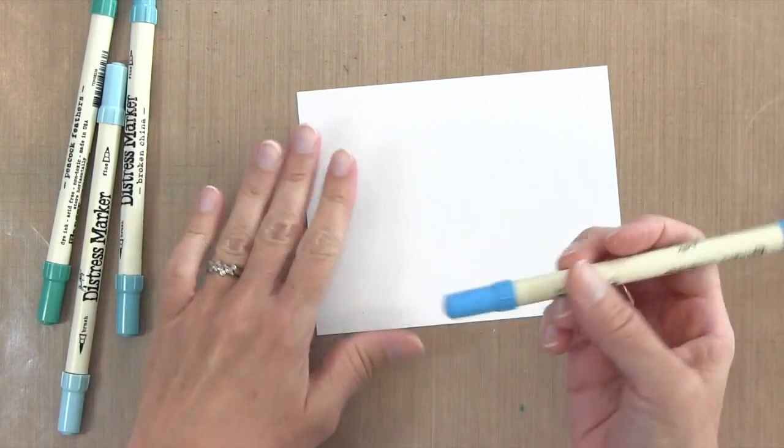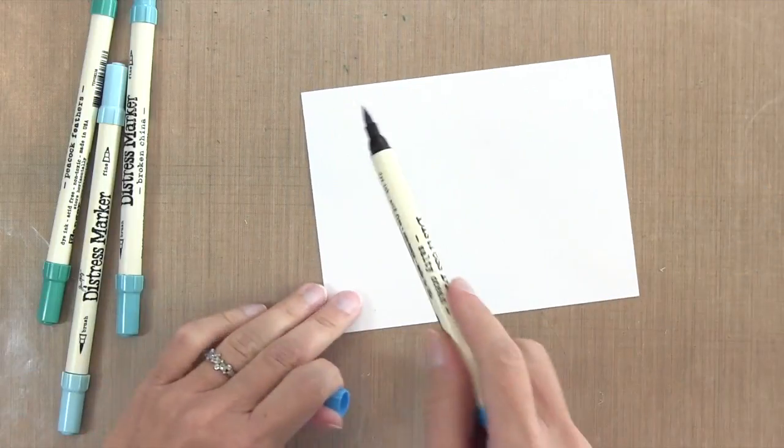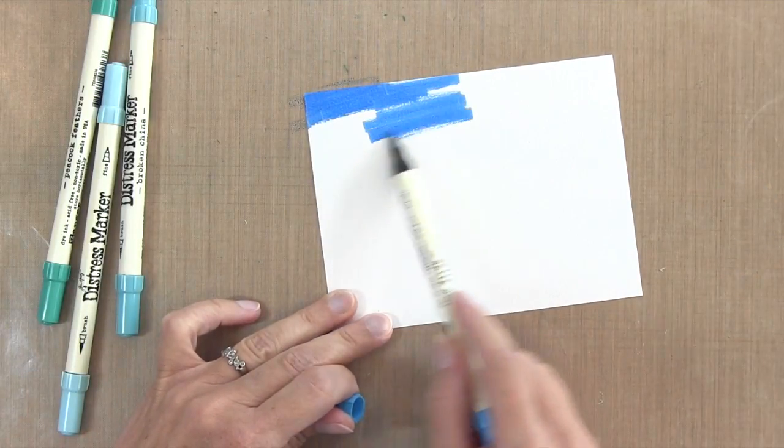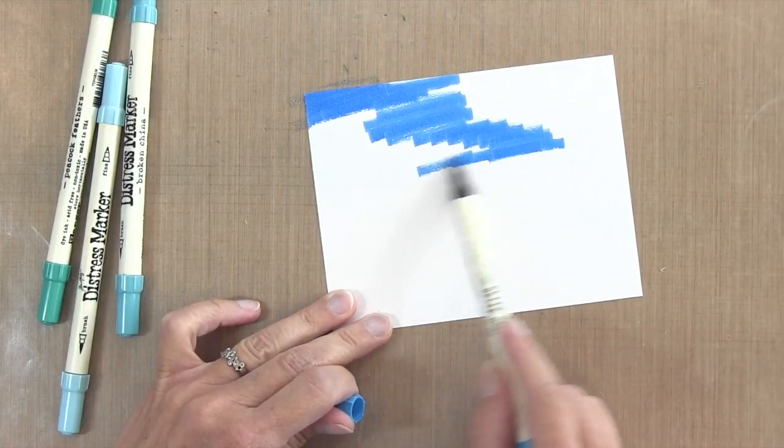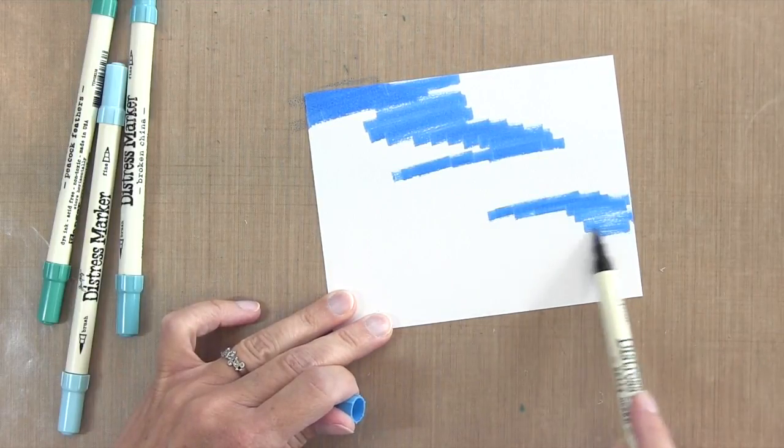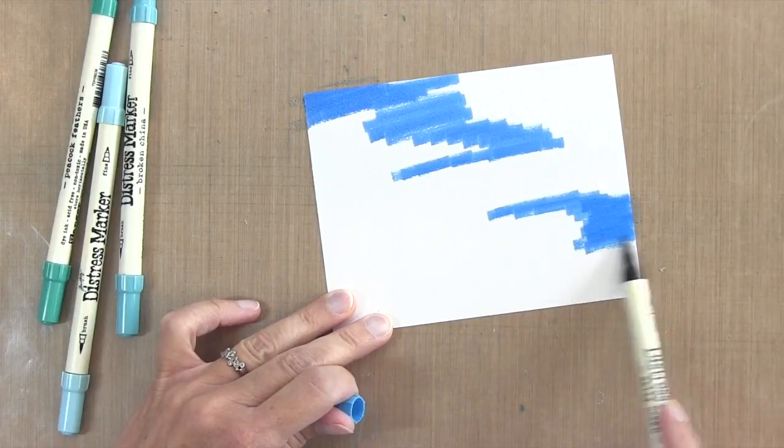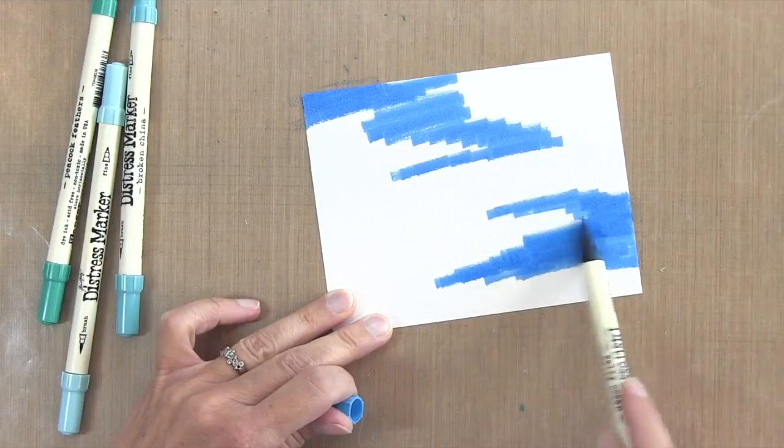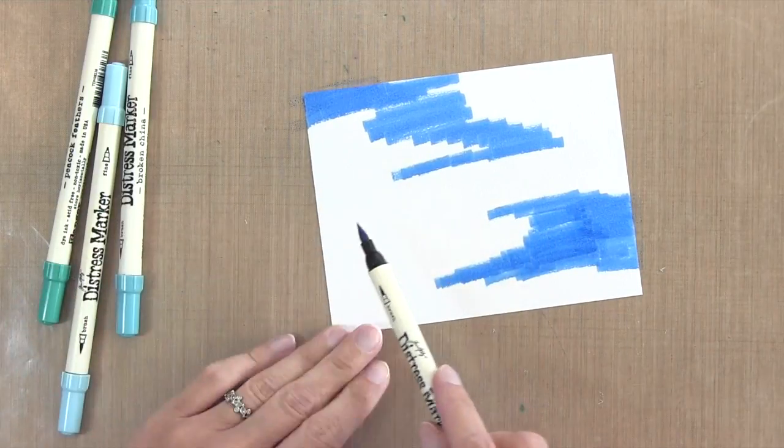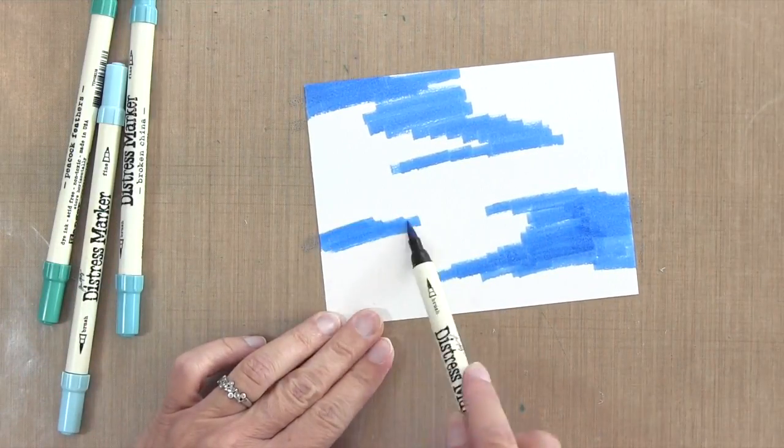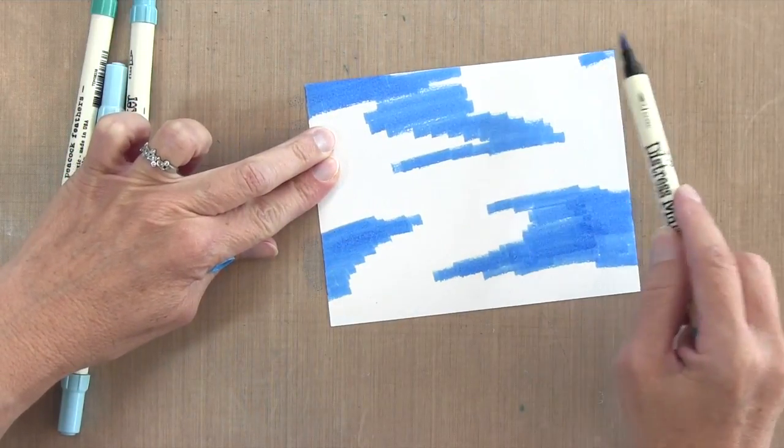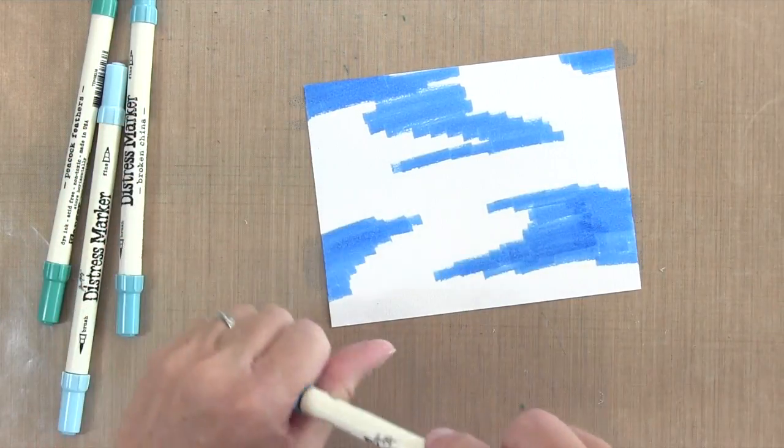I'm going to create my watercolor panel with four different blue distress markers. I have a piece of Canson XL mixed media watercolor paper. It's 90 pounds, so it's pretty thin, and it's cut to 4.5 by 5.75 inches, just a little larger than A2 size. I'm going to start with my darkest color, this is Salty Ocean. You'll notice that I have my pen tilted downward, parallel to my work surface, so I get a wide application of color off the brush tip. I'm randomly applying the color from left to right, swiping side to side.